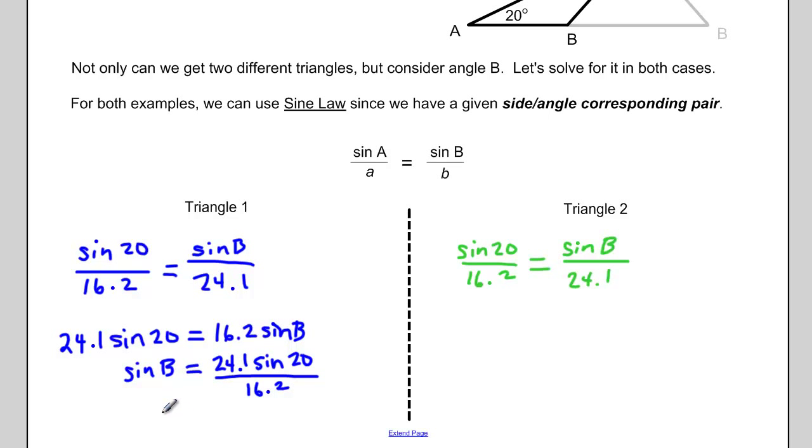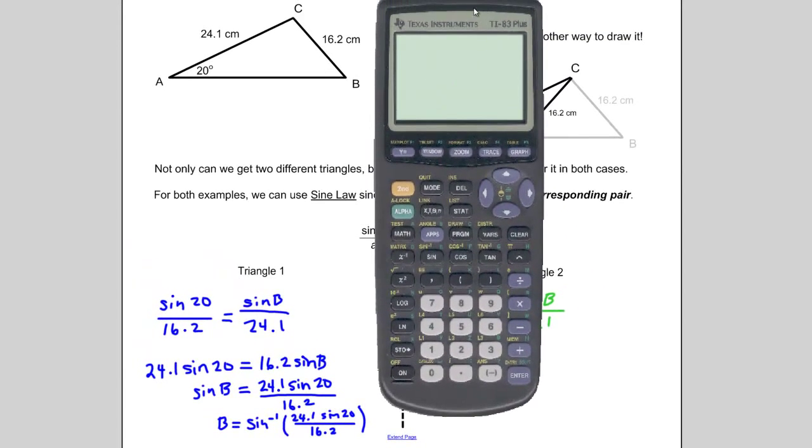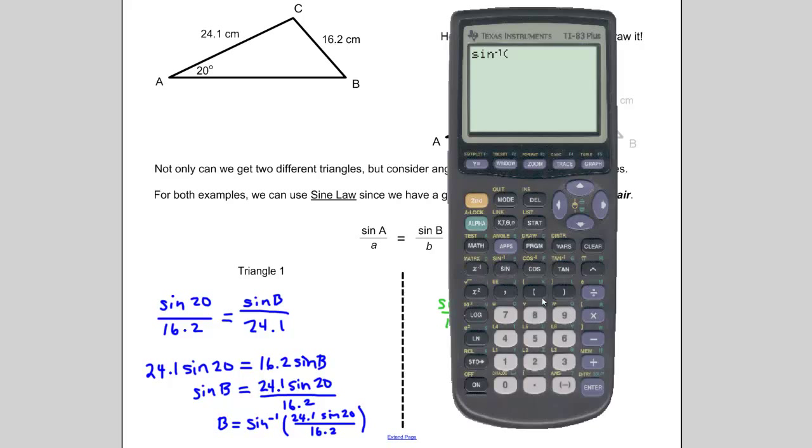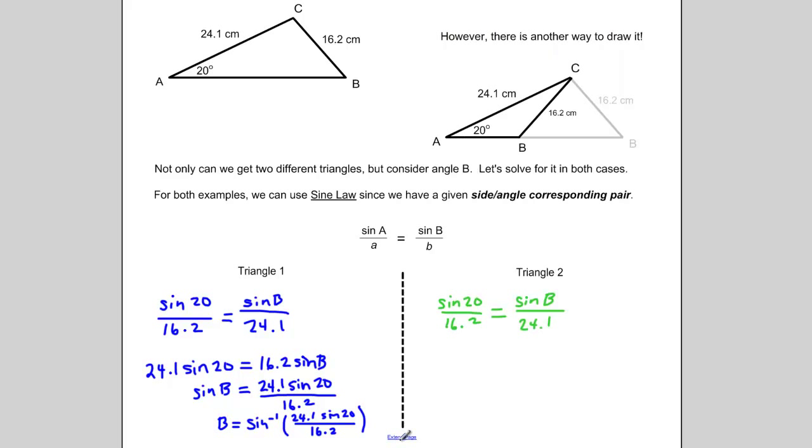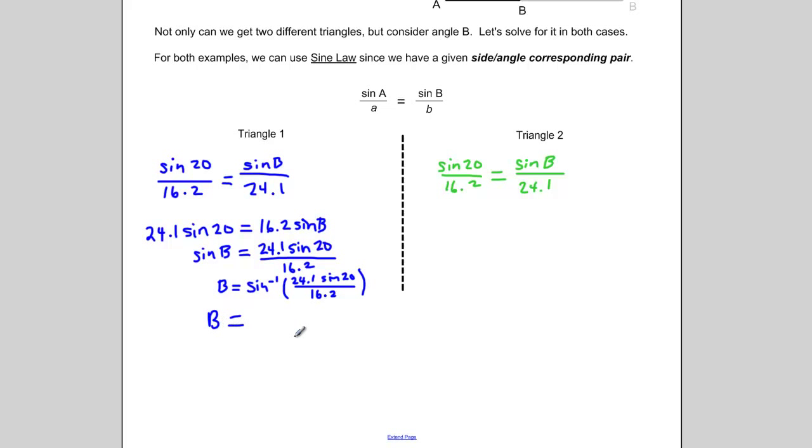Now that's what sine B equals. If I want B by itself, remember I just need to take the inverse sine of the other side. So angle B is going to equal the inverse sine of this whole mess right here. So let's get our calculator out here and we'll see if we can solve for this. So inverse sine of 24.1 sine 20 divided by 16.2. And we got 30.58 or we can round that to one decimal place, 30.6 degrees.